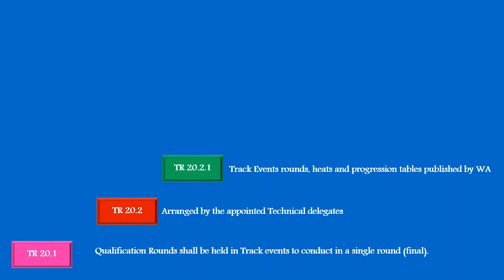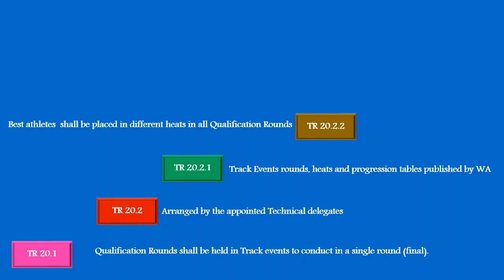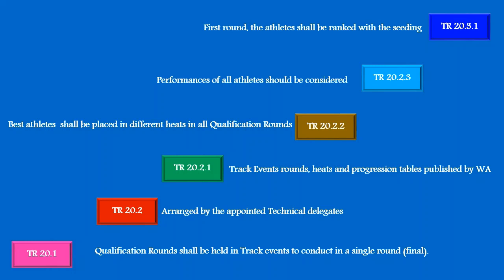Technical Rule 20.2.2 says whenever possible, representatives of each member or team and the best-performed athlete shall be placed in different hits in all qualification rounds of the competition. Technical Rule 20.2.3 says when heats are being arranged, the performances of all athletes should be considered and the heats drawn. Technical Rule 20.3.1 says for the first round, the athletes shall be ranked with the seeding determined from the relevant list of valid performances achieved during the pre-determined period. The above rules were followed strictly during the Olympics also.